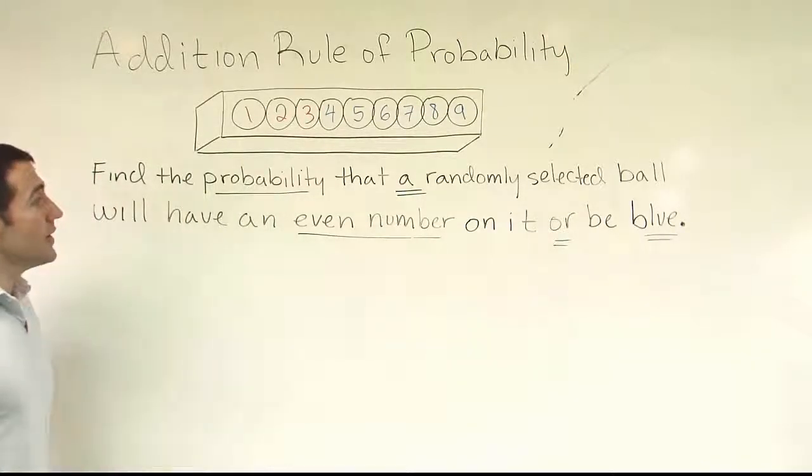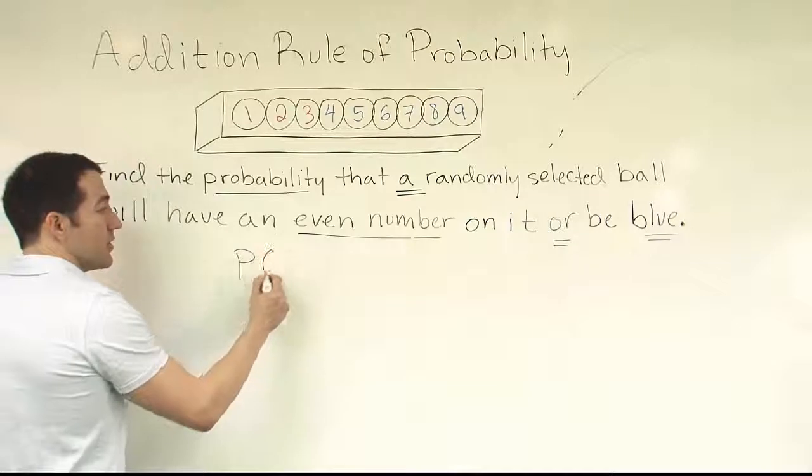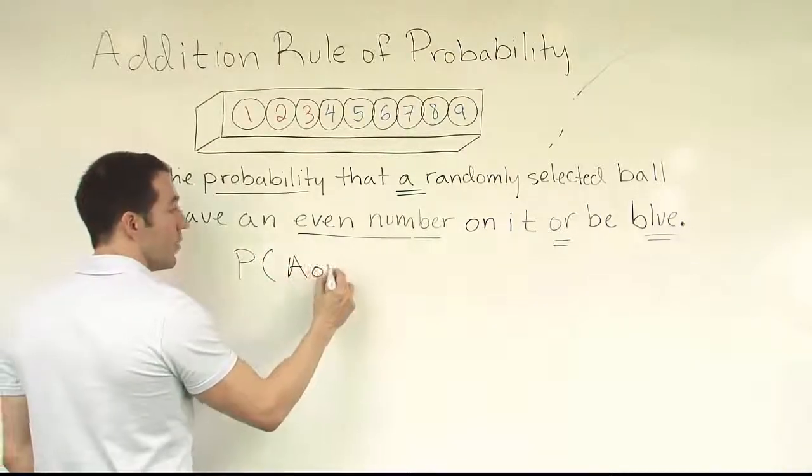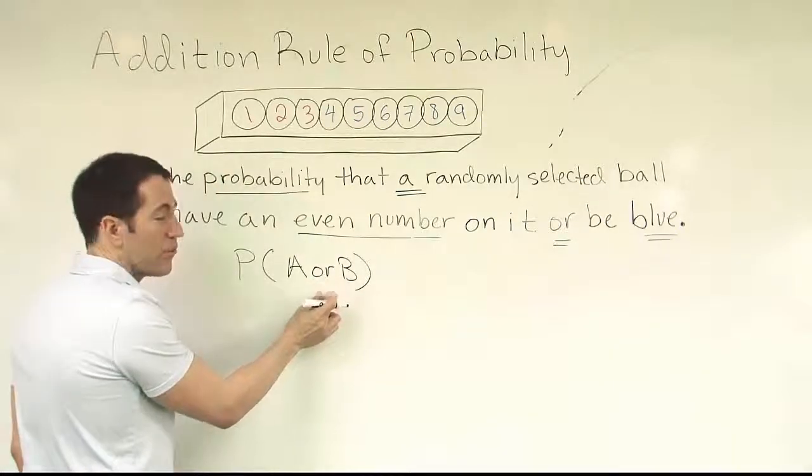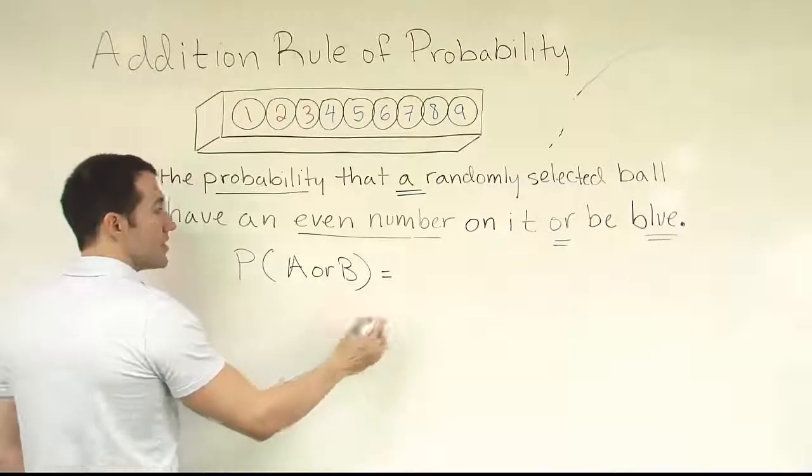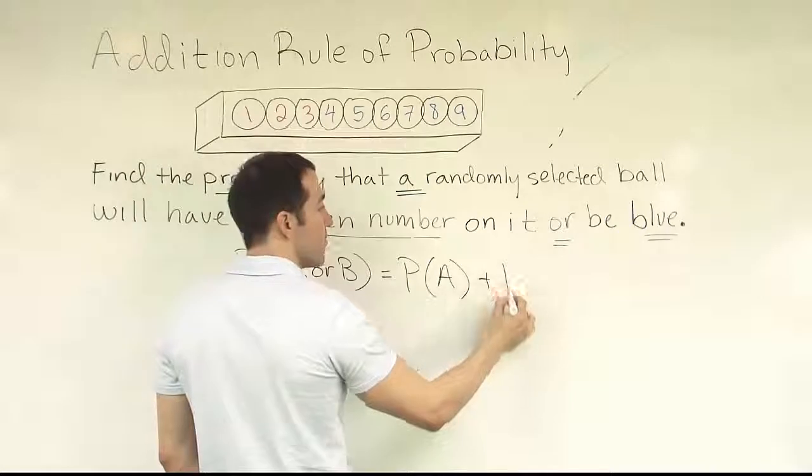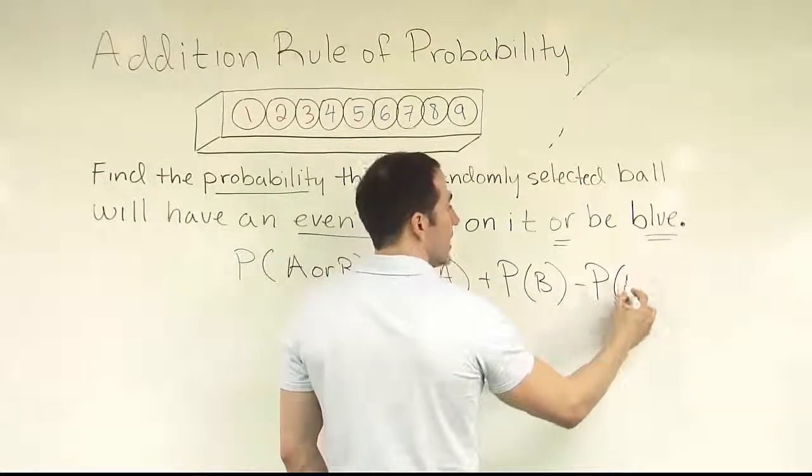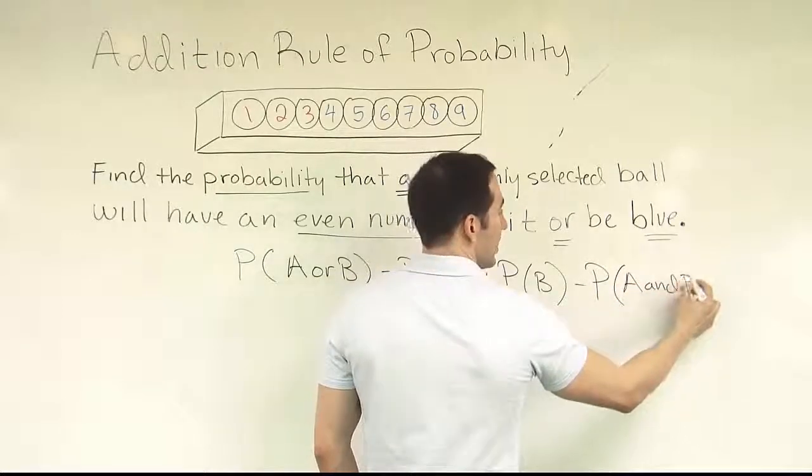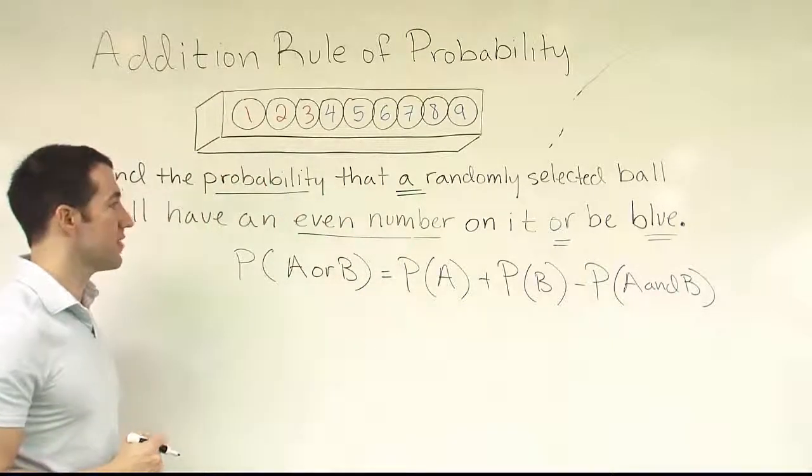Okay, so now that we know it's addition rule of probability, the next question is how do we actually go about solving a problem like this? Well, the generic formula for addition rule of probability is written as the probability of A or B. Sometimes you see the union symbol in place of the word or. All right, but either way, A or B is then expressed as three fractions, the probability of A plus the probability of B minus the probability of A and B. And this end is sometimes expressed as an intersection symbol from set theory.